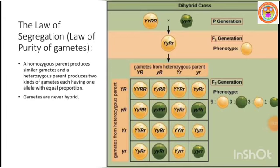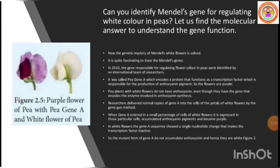Dear students, in the continuing session we are also going to look at how the color of the flower changes. There was a question that arose — can you identify the Mendelian gene for regulating white color in flowers in peas? The answer was found by studying molecular genetics.